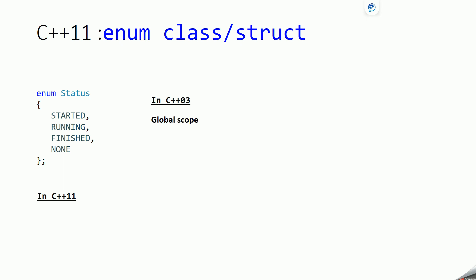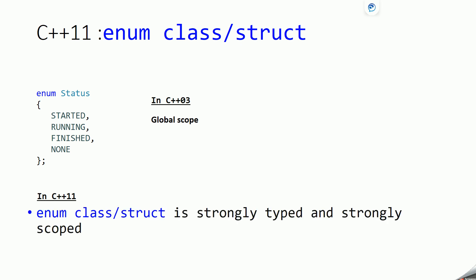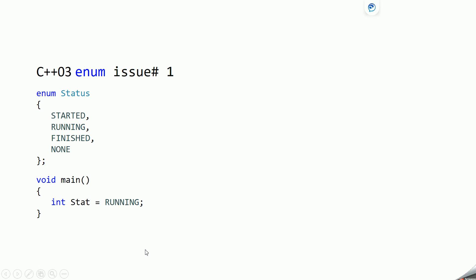Due to this global scope, there are some problems that can be resolved using C++11 enum. In C++11, enum is strongly typed and strongly scoped — we will see what that means with some examples in upcoming slides. So let's see some of the issues with C++03 enum.